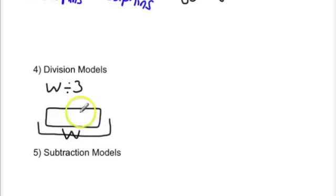We need to divide W which is this entire piece. This is our unknown, our variable. We need to divide it into three parts. So we would actually show dotted lines to show that we are actually dividing this into three parts. So our division model for W divided by three would look like this.